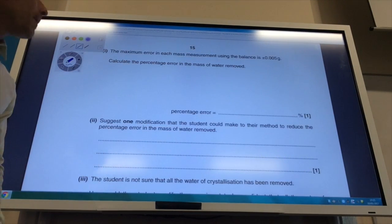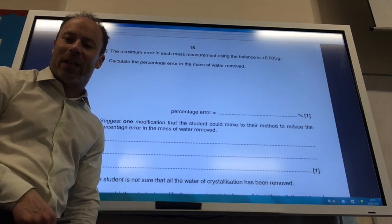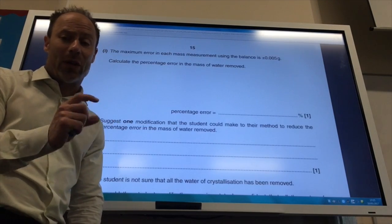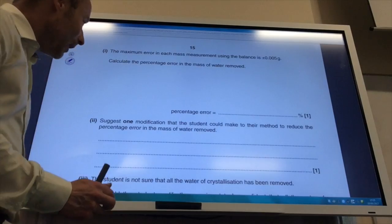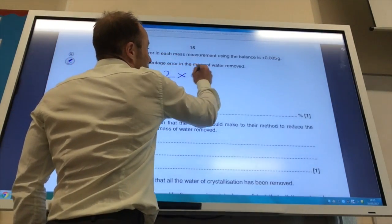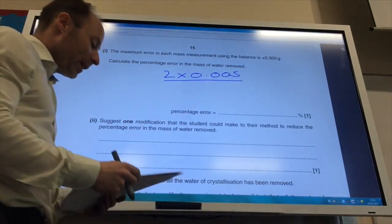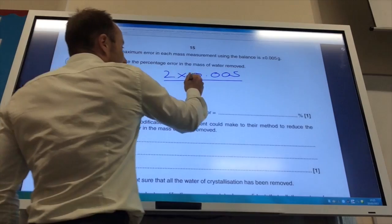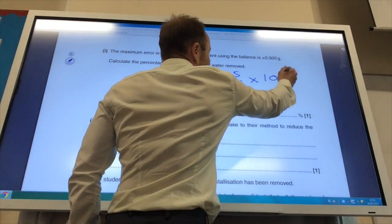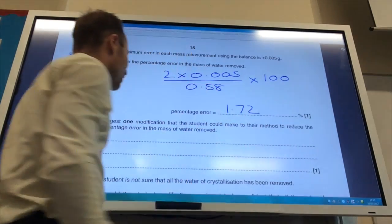Right, so it wants me to calculate the percentage error in the balance. Now, if we remember a minute ago when we worked out we used the balance twice. We used it to weigh the crucible with the hydrated salt and we used it to weigh the crucible with the anhydrous salt. So, we need to times this error by 2. So, it's 2 times 0.005. That's divided by the reading, which we worked out to be 0.58 grams, times by 100 to convert it into a percentage, and the percentage error is 1.72%.